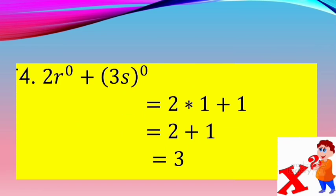Number 4: 2r to the power of 0 plus quantity of 3s to the power of 0. We have 2 times 1 — from r to the power of 0 — but 2 is not affected because it is not inside the parentheses with r. Plus 1, because 3s to the power of 0 equals 1. So we have 2 times 1 equals 2, plus 1 equals 3.